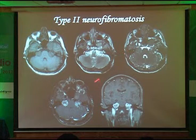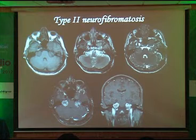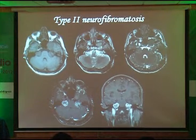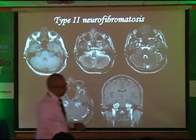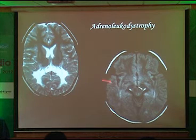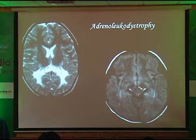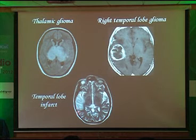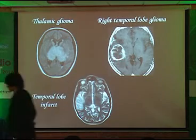Bilateral acoustic neuromas are classical NF2 — if you see bilateral acoustic neuromas, you know you are dealing with NF2. There can also be a brainstem infarct, or this patient with adrenoleukodystrophy showing lateral lemniscus involvement — these are the auditory pathways and how they are affected. There can be medial geniculate body involvement, posterior inferior thalamus involvement, infarct in the right temporal lobe, or a tumor with irregular enhancement.